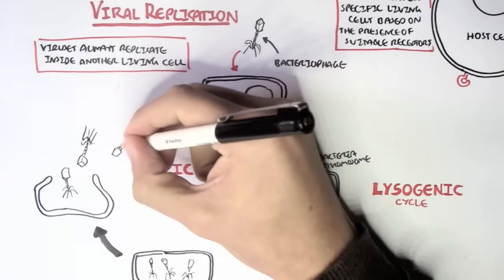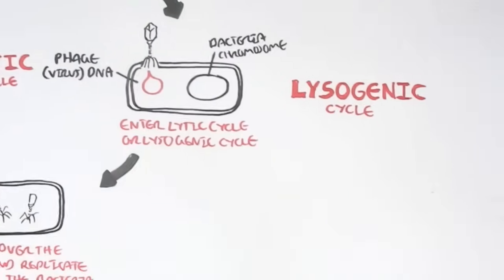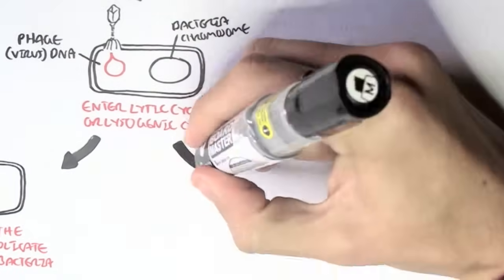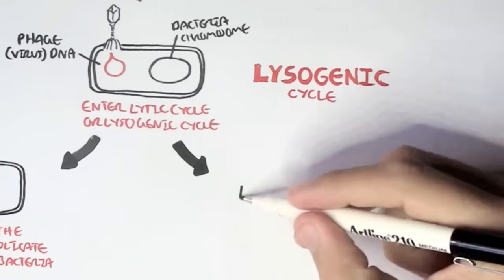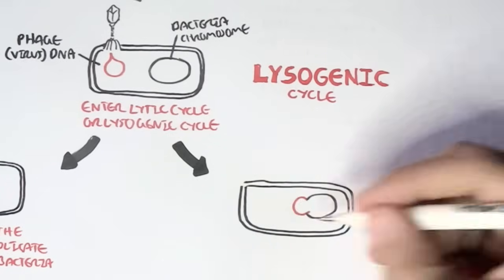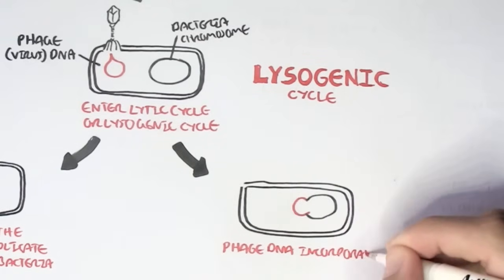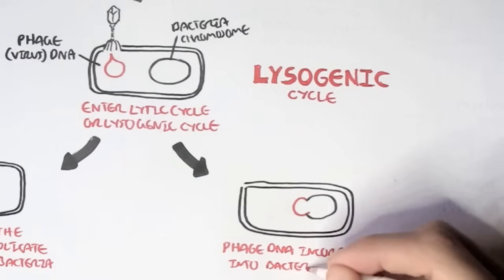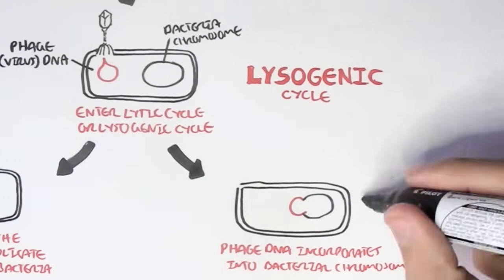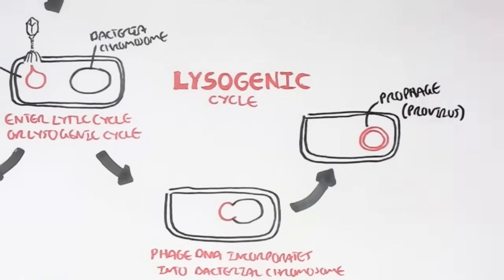The lytic cycle is actually the most common outcome of the phage infection, but sometimes the lysogenic cycle can occur. However, following the insertion of the phage DNA inside the bacteria, the phage DNA can actually incorporate itself into the bacterial DNA, the bacterial chromosome, creating what's called a prophage or provirus.